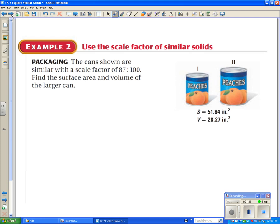The cans are similar, with a scale factor of 87 to 100. Find the surface area and volume of the larger can. Notice the surface area of the smaller can is 51.84. That means that we have to find the area ratio, which is 87 squared over 100 squared. And this is equal to some unknown surface area.